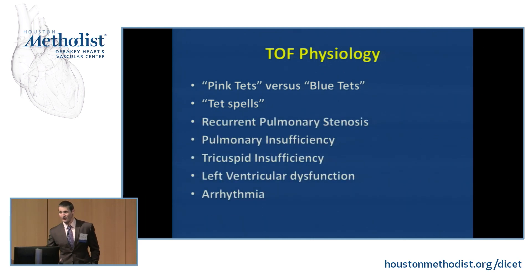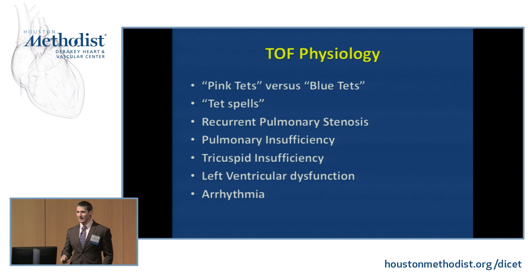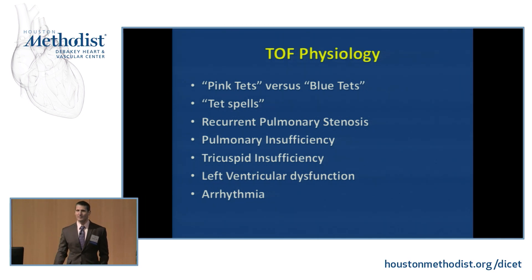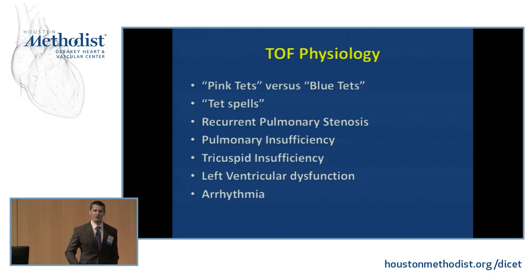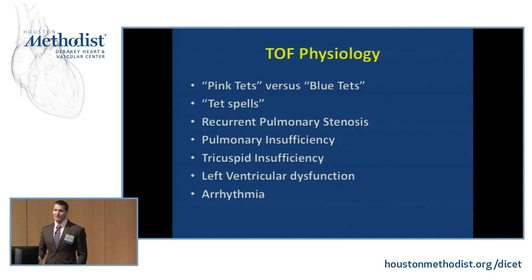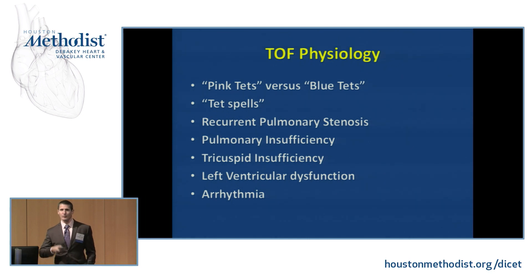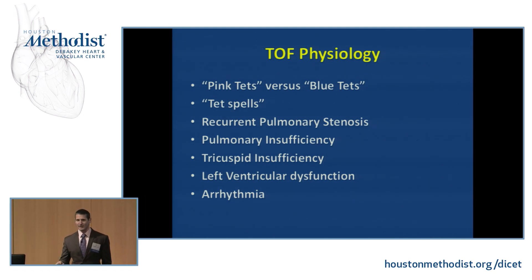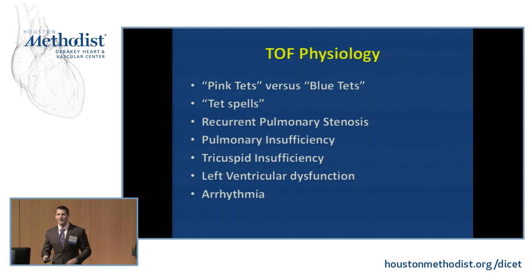Most common problems in adults: they can get recurrent pulmonary valve stenosis, more commonly pulmonary valve insufficiency. Pulmonary valve insufficiency left unattended leads to progressive right ventricular dilatation and tricuspid insufficiency. In about up to 20% of cases, patients can develop left ventricular dysfunction, which is a non-ischemic cardiomyopathy. The reasons for this are not entirely clear — it may have to do with the genetic etiology of the disease, ventricular interdependence, or suboptimal left ventricular filling within the relatively constrained pericardium.